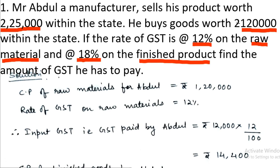Find the amount of GST he has to pay. First of all, let the cost price of raw materials for Abdul be Rs. 1,20,000. Rate of GST on raw materials is 12%. So input GST paid by Abdul is Rs. 1,20,000 × 12 / 100, which equals Rs. 14,400.